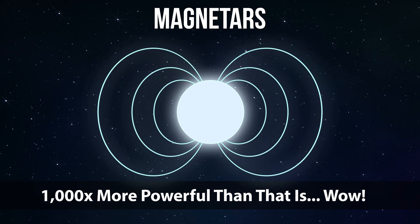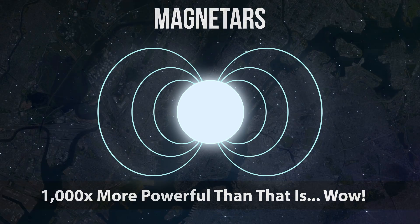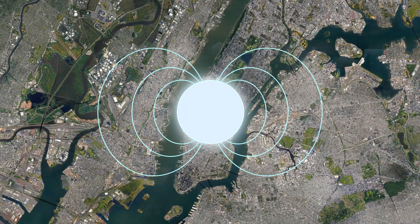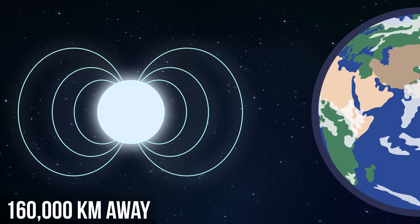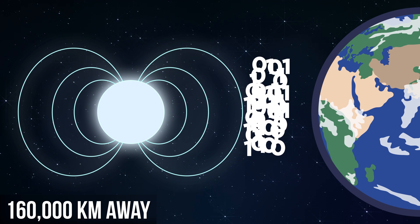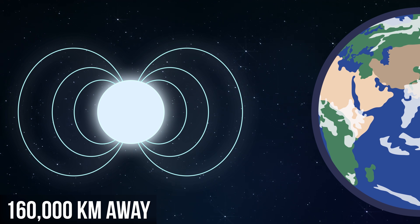And weird things begin to happen if you get too close to one. Remembering that these objects are only the size of Manhattan, if one was a distance of 160,000 kilometers away, the magnetic field would be powerful enough to strip all the information off of all the credit cards on Earth.